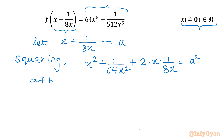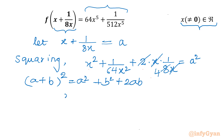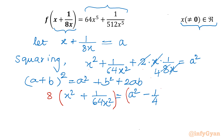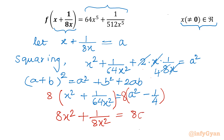I have used the (a+b)² formula: a² + b² + 2ab. So I can cancel x and x, and cancel 2 and 8 to get 1/4. This gives x² + 1/64x² = a² − 1/4. Now multiplying both sides by 8: 8x² + 1/8x² = 8a² − 2. Let me call this Equation 1.